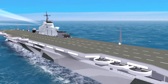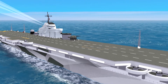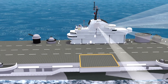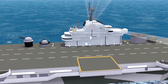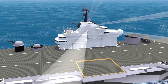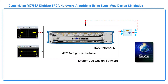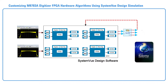Active electronically scanned array systems require precise amplitude and phase control to steer their beams. These complex systems require new design-to-test methodologies to help ensure system performance. In this video, we will show a new design-to-test methodology to customize the FPGAs in the M9703 Multi-Channel Digitizer using SystemVue design software. The FPGAs will be used to correct the channel-to-channel amplitude and phase versus frequency using an LFM Chirp radar stimulus.